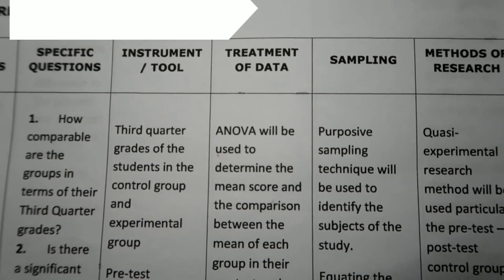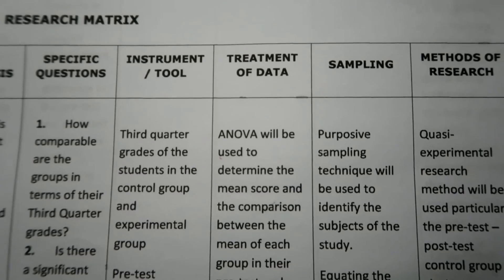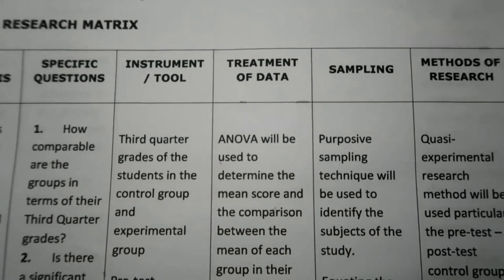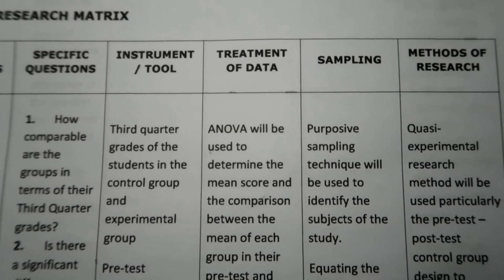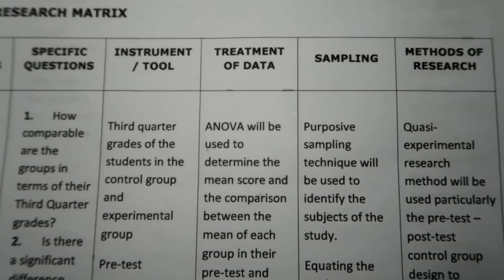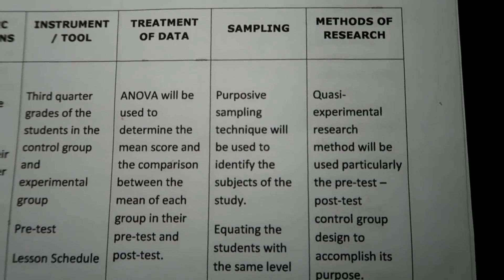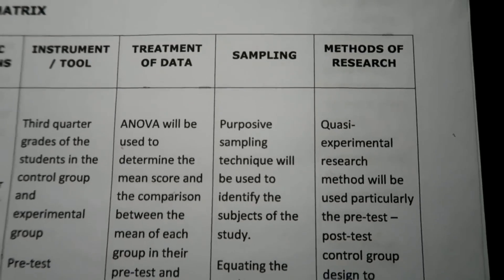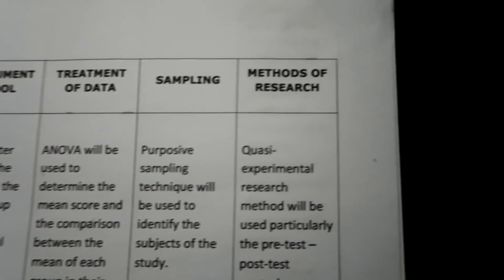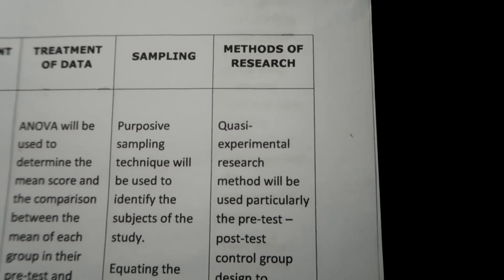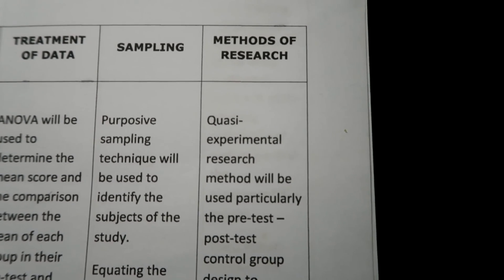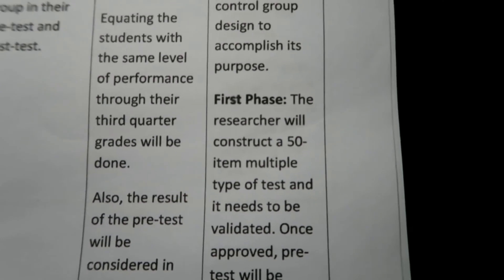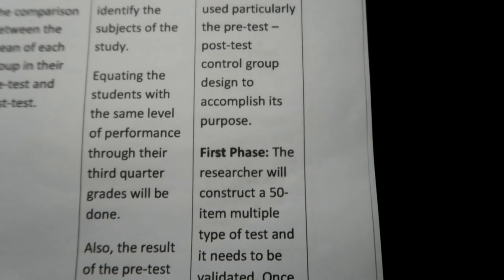The treatment of data shows the statistical treatments used to analyze the gathered data — ANOVA is used according to this table, and aside from ANOVA there would be other statistical treatments included on the next page of the research matrix. The sampling method used here is purposive sampling, and the reason for selecting it is also reflected here. The last column is the type of research method used — specifically, this research matrix used quasi-experimental, with the stages of its implementation also included in the column.